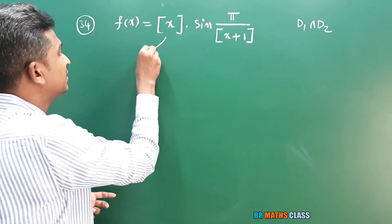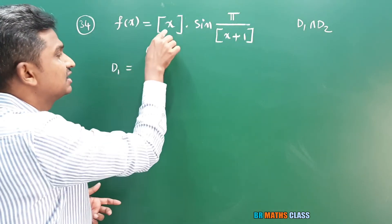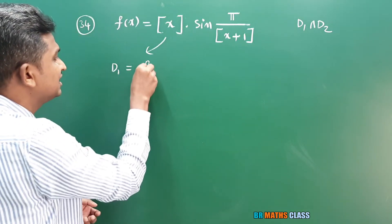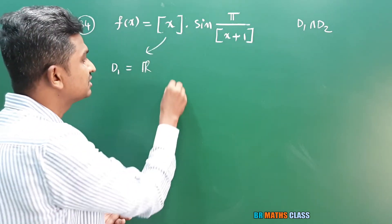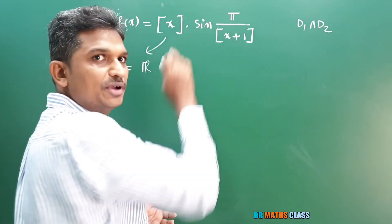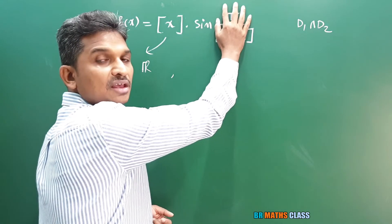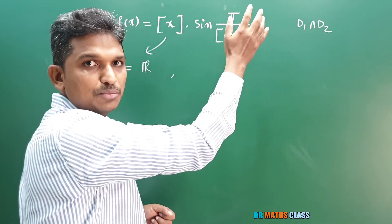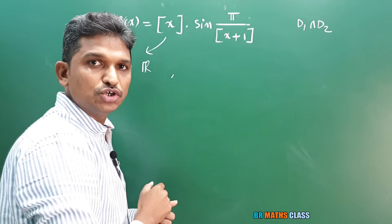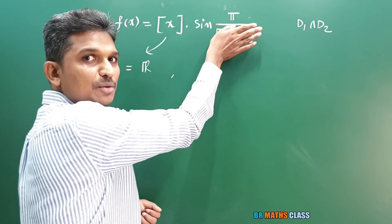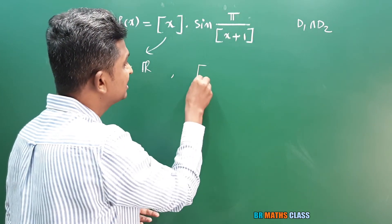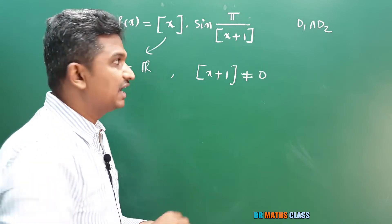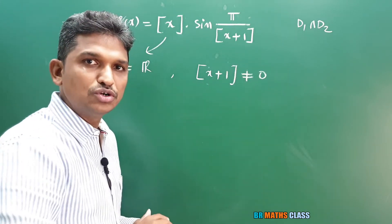The domain of the floor function (step function) part: the greatest integer function is defined for all real numbers, so its domain is all real numbers. Now for the second part — it involves sine of something divided by (step x + 1). Sine x domain is all real numbers, so it is defined for all real numbers. But since it is of the form f(x)/g(x), the denominator (step x + 1) cannot be equal to 0.